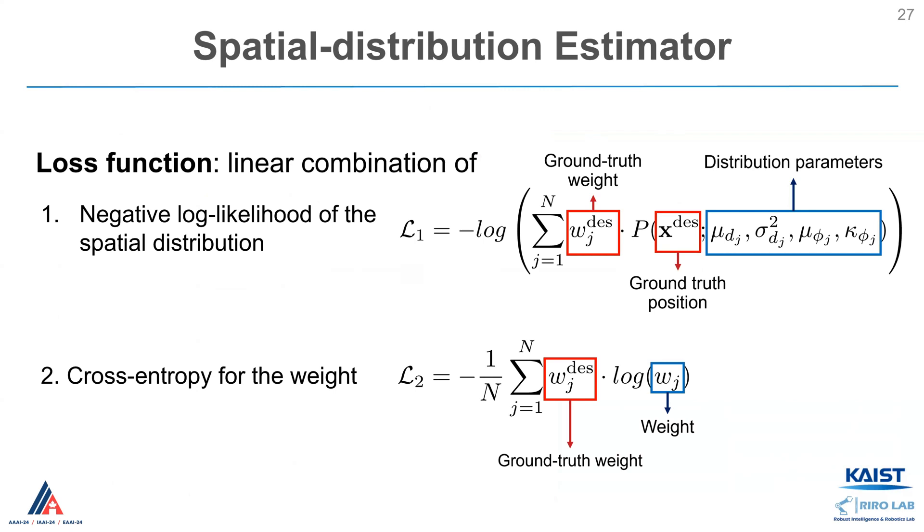We design the loss function for the estimator as a linear combination of two loss functions. The first one is a negative log likelihood of spatial distribution given a ground truth position and ground truth weight. The next one is cross-entropy loss, reducing the gap between ground truth and predicted weight.